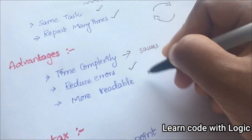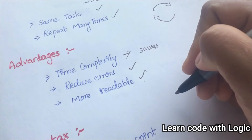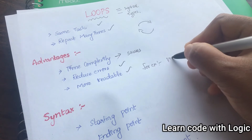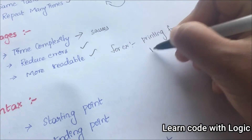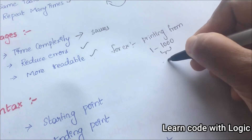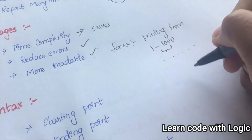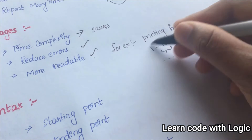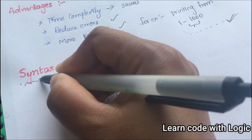The code is also more readable and understandable. For example, if you are printing numbers from one to one thousand, it's not possible to write all the numbers manually. So instead, you can say starting from one to one thousand, print all numbers — it's that simple.